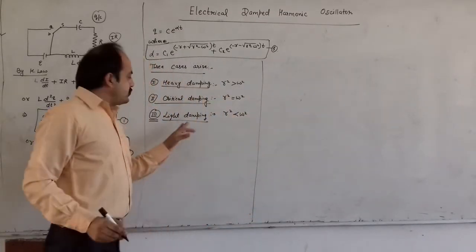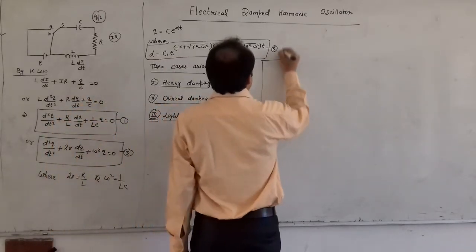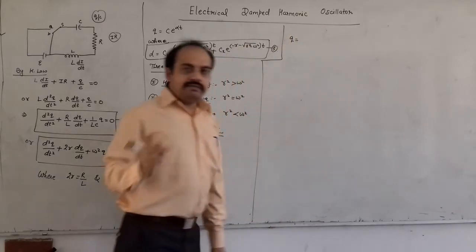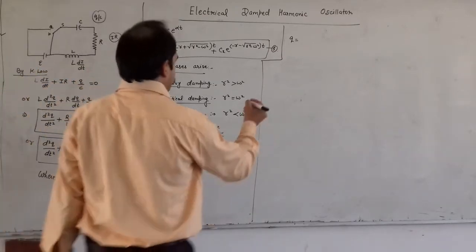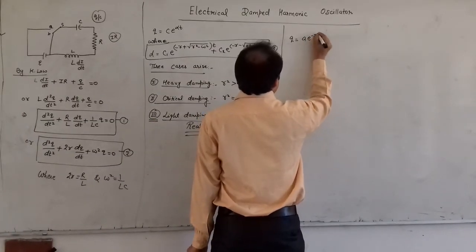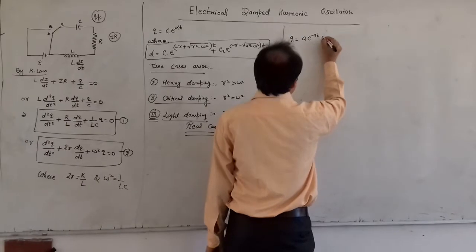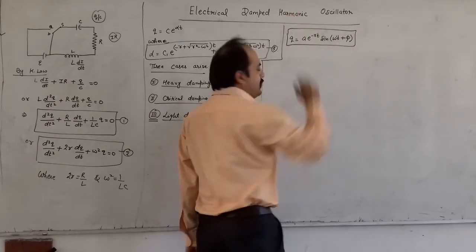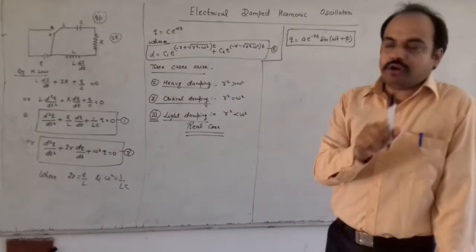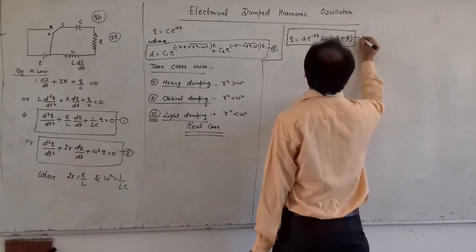For the light damping case, which is the physically real case, we can obtain the expression for charge Q. We get Q = A·e^(−βt)·sin(ω′t + φ). This is similar to the expression for the mechanical damped harmonic oscillator, where displacement x was replaced by charge Q. Let this be equation number 4.